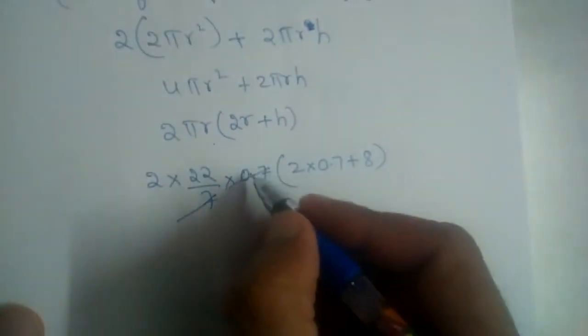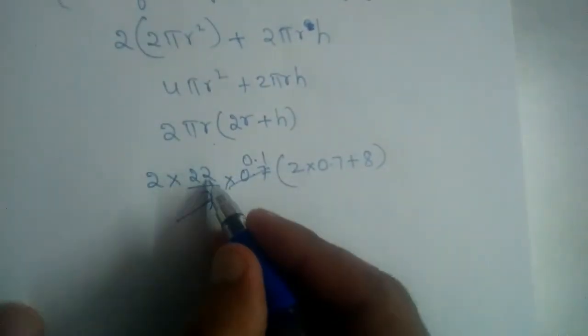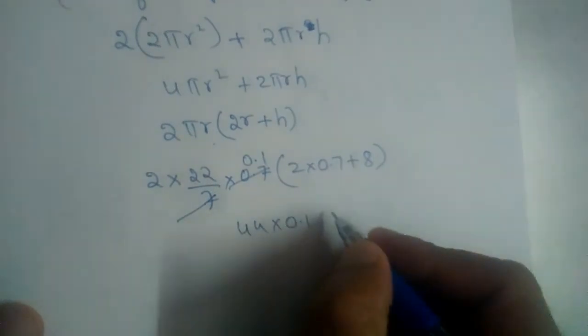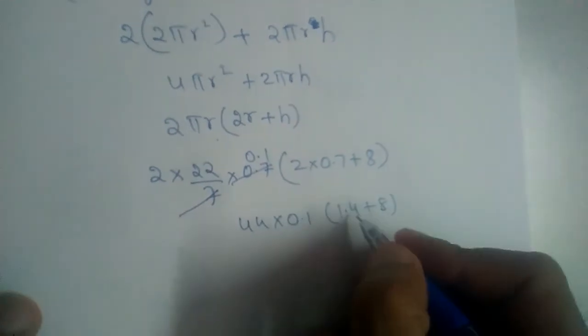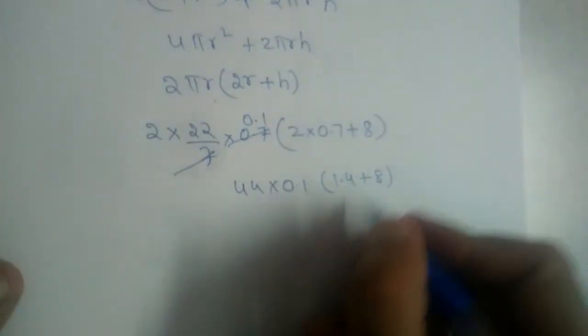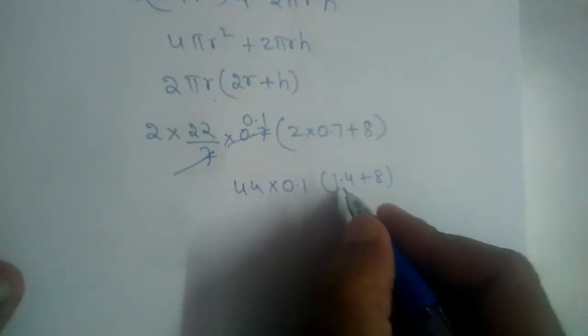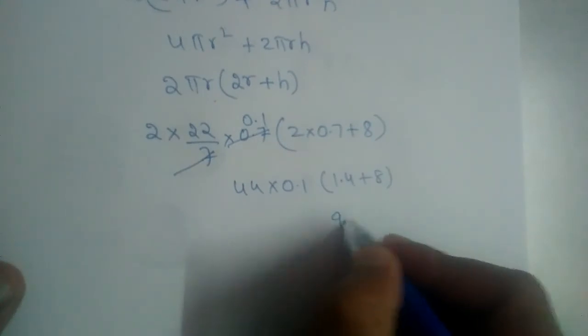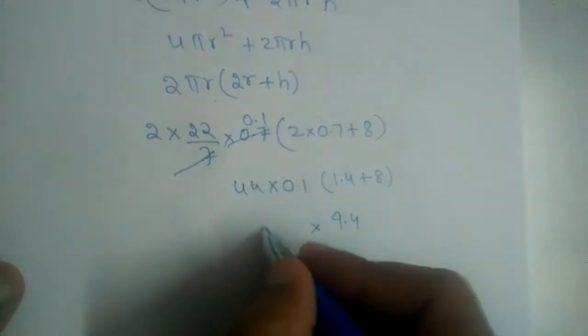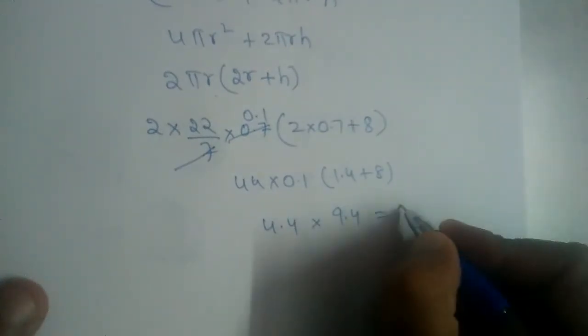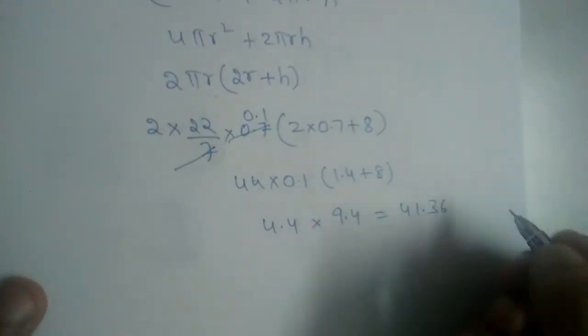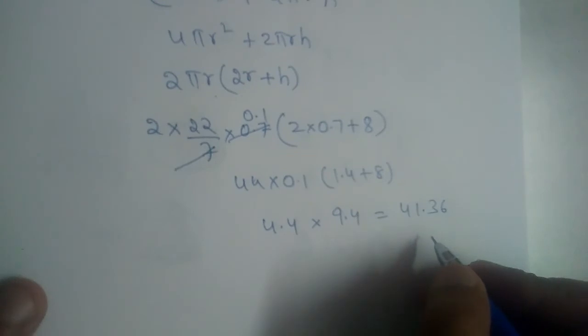So this and this will go 0.1 times, so 2 into 22 is 44 into 0.1 and this is 1.4 plus 8, 2 into 0.7 is 1.4. So 8 plus 1.4 will give us 9.4 into, this is 4.4, 44 into 0.1. So this will give us 41.36.